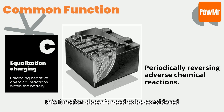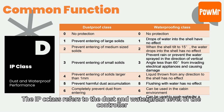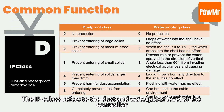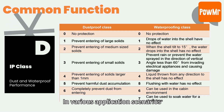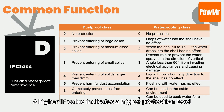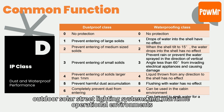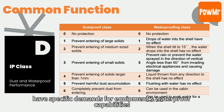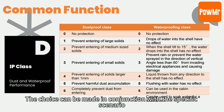The IP class refers to the dust and water protection level of the controller. In various application scenarios, there are different requirements for the dust and water protection performance of the controller. A higher IP value indicates a higher protection level. For instance, outdoor solar street lighting systems and maritime environments have specific demands for equipment's waterproof capabilities. The choice can be made in conjunction with the specific scenario.